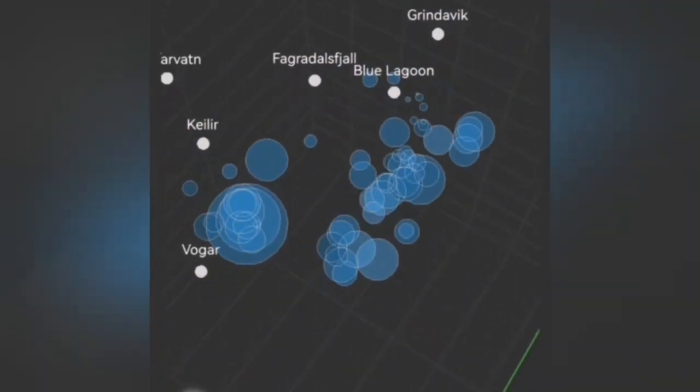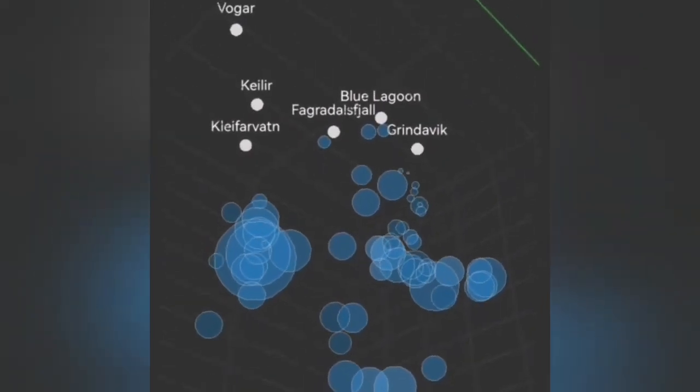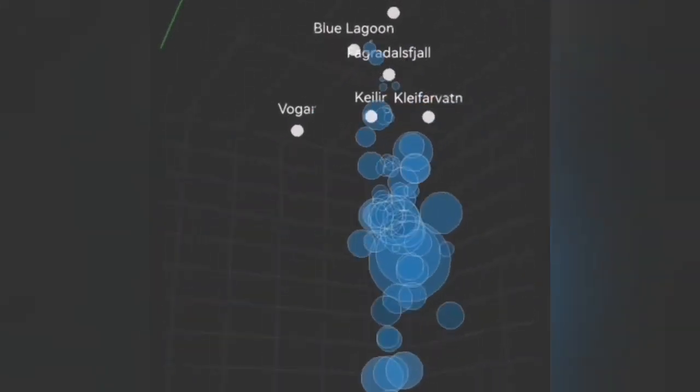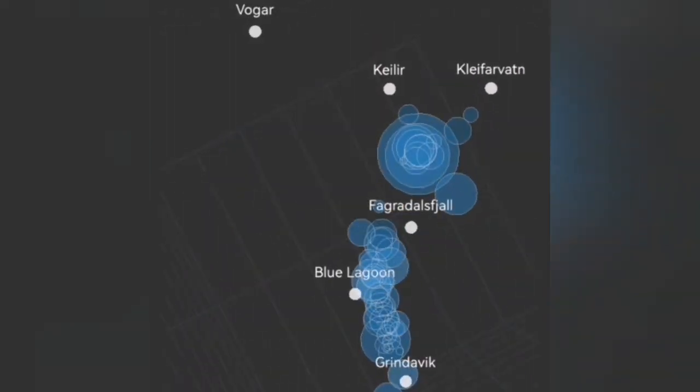The latest seismogram, depth of the earthquake, shows that we have at the depth of 5 km, and now reducing, some earthquake activity.